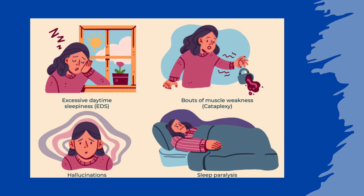Narcolepsy affects the brain's ability to regulate the normal sleep-wake cycle. In normal sleep, there is a regular pattern of REM and non-REM stages, with a normal sleeper experiencing several minutes of REM sleep roughly every 90 minutes. In people with narcolepsy, the nocturnal sleep pattern is far more fragmented and typically involves numerous awakenings. When falling asleep — at night or during the day — people with narcolepsy rapidly enter REM sleep, leading to unusual dream-like phenomena such as hallucinations. They also find it difficult to stay awake for long periods, causing significant disruptions in their daily routine.